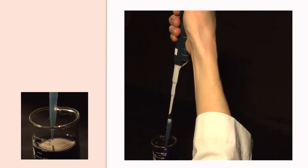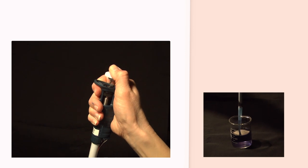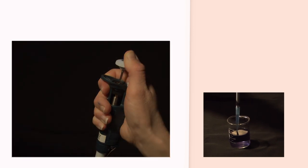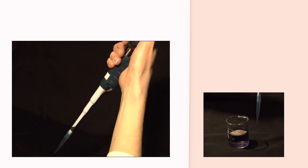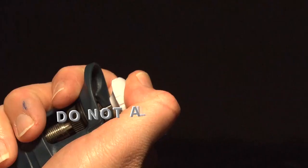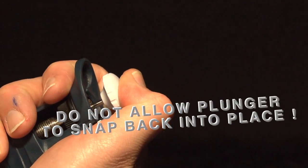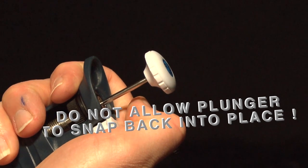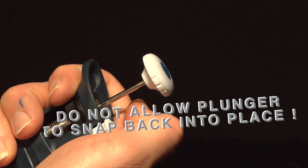Put the tip below the surface of the liquid and gently draw the liquid into the tip. Do not let the plunger snap back into place, as this will not allow for accurate volume withdrawal and may even introduce contamination into the barrel.